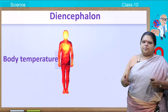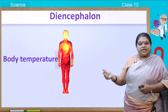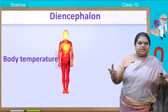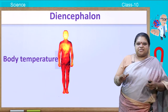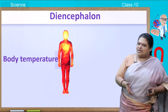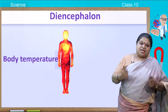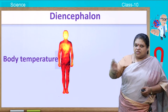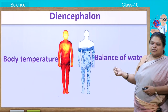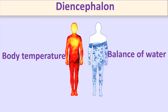The hypothalamus controls several functions. For example, it maintains body temperature. We are homeothermic or warm-blooded animals, meaning our body temperature should remain constant — whether you are in the Himalayas or the Thar desert. If body temperature increases, it means you have a fever. The hypothalamus also helps in osmoregulation — the balance of water in the body.